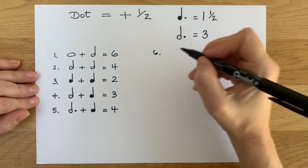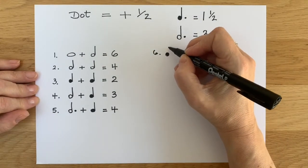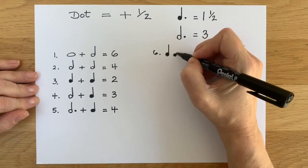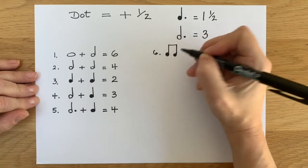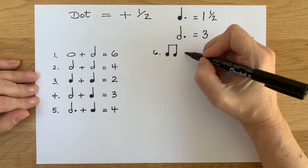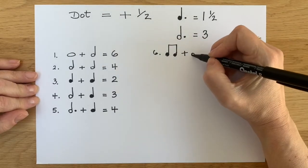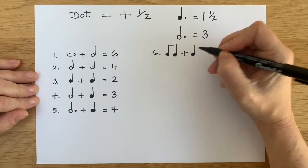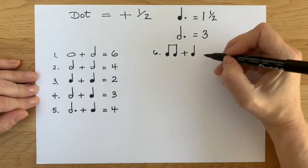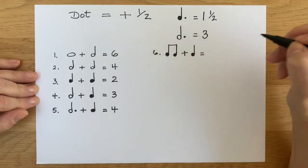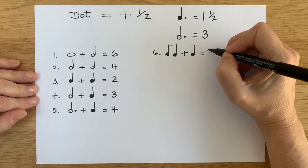So here's number six. And in number six, we're going to have two quavers together. And then we're going to add a crotchet. So have a little think. The answer is two.